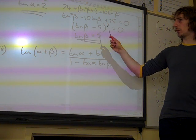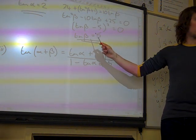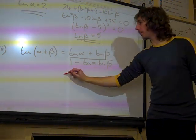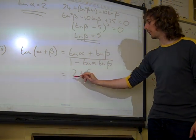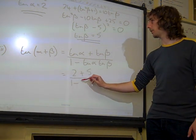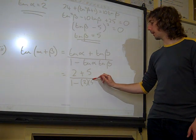And then we've got these two values for tan alpha and tan beta. So this must be 2 plus 5 on the top and 1 minus 2 times 5 on the bottom.